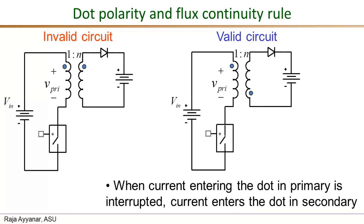Now just by changing the sense of winding direction on the secondary — making the dot come to the bottom — this is the same circuit except the secondary winding direction is reversed and the dot appears at the bottom. This is now a valid circuit: when the switch is on, current enters the dot, and when the switch is turned off we need a current that enters the dot on the secondary side, which is now readily supported by the diode in this direction. This is an example of how the dot polarity can either make a circuit valid or invalid.